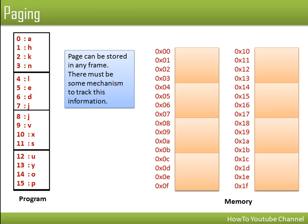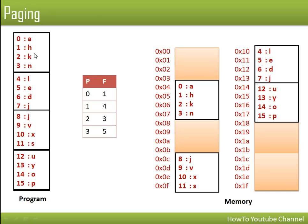A page can be stored in any frame. Let's say the first page is stored in frame one, the second page is stored in frame four, the third page is stored in another frame, and so on. There will be a table that specifies which page went into which frame. Page numbers start from zero: page 0, page 1, page 2, page 3; and similarly frame 0, frame 1, frame 2, and so on up to frame 7. This table is known as the page table. The page table specifies which page is stored in which frame.